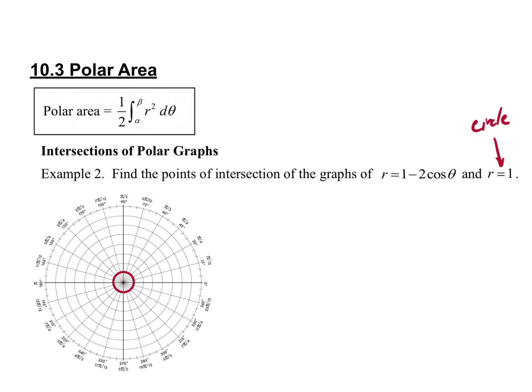The nice thing about this problem is whenever you have just r equals some number, they're telling you what the radius is, which means it's a circle — easy to graph. This other one is a limaçon. I'm looking for important points: when cosine equals zero, when cosine equals one, when cosine equals negative one, in order to get a feel for the shape we're forming.